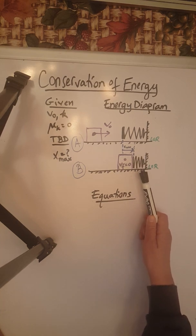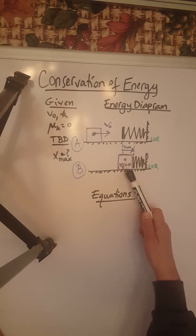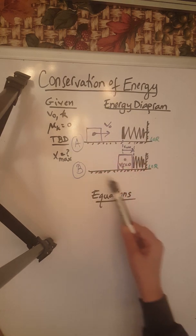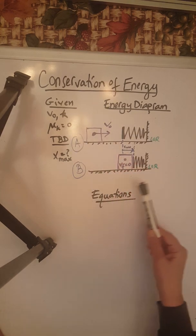When the spring has been compressed at its maximum, the object will stop—it cannot move any further. So this is what we have here in terms of our energy diagram to begin with.